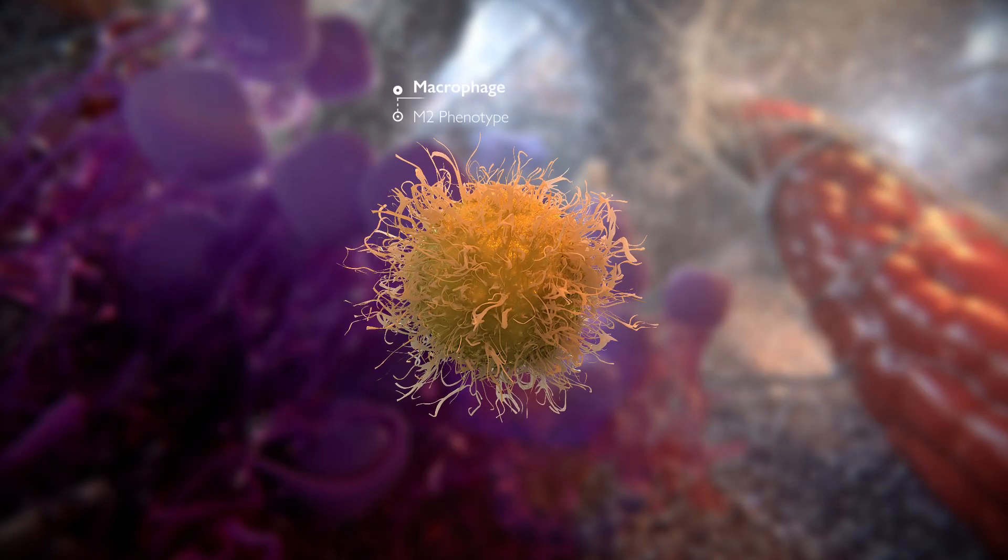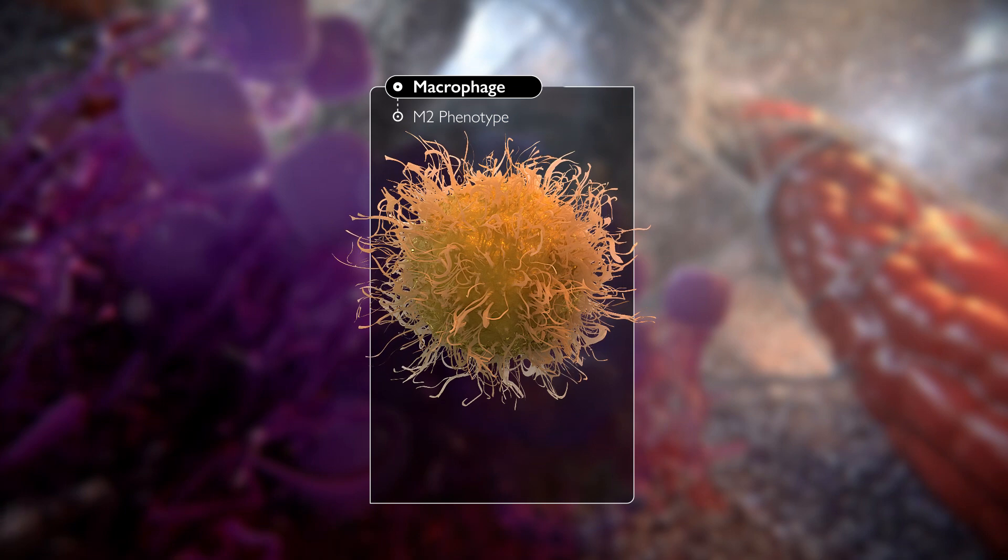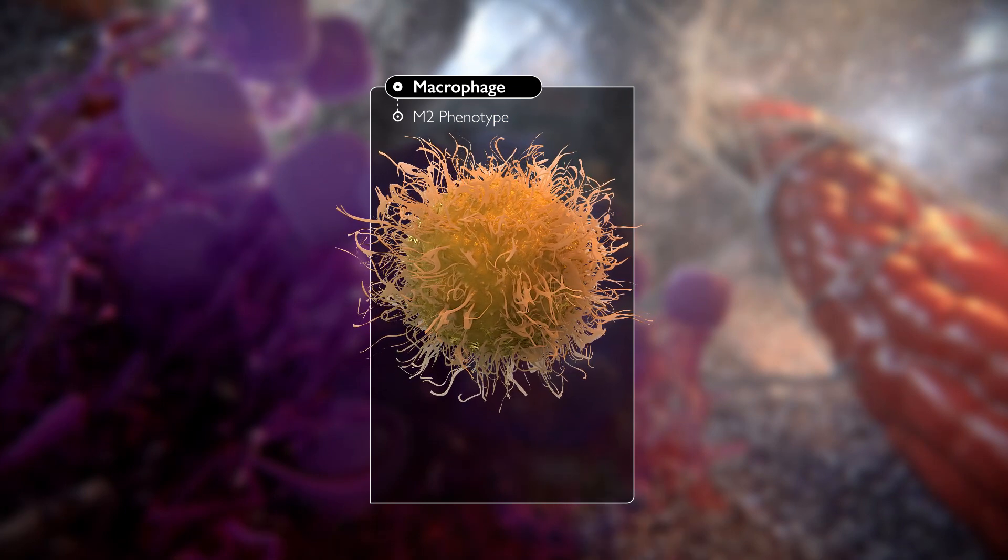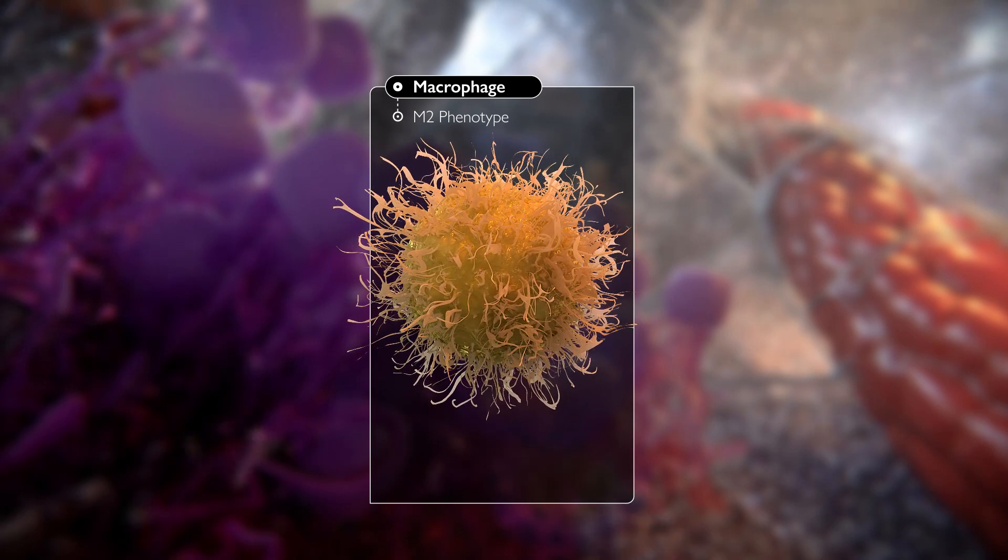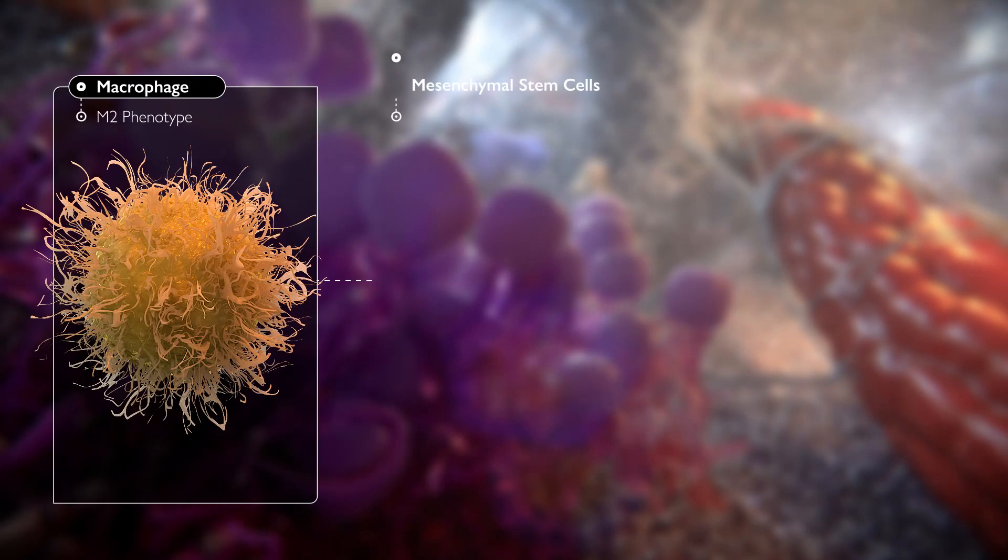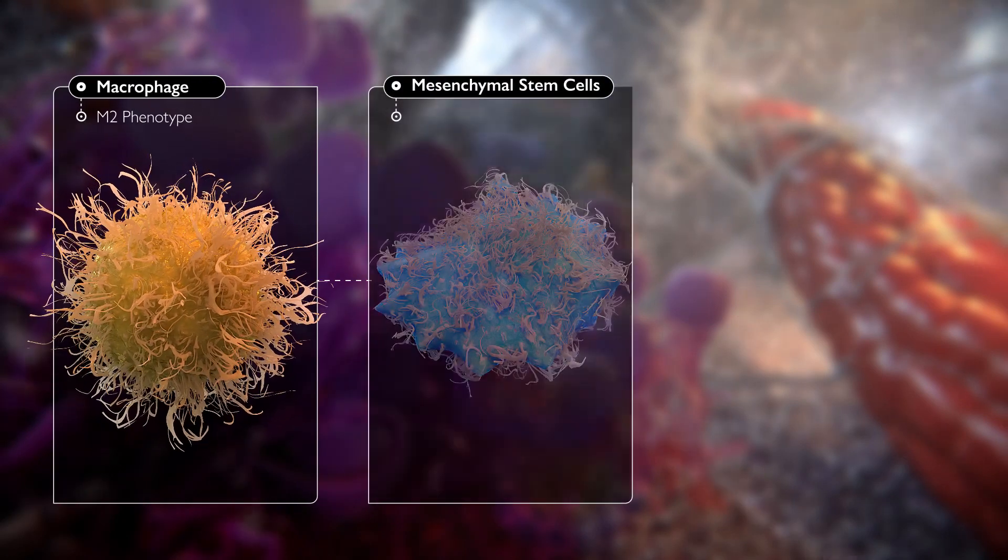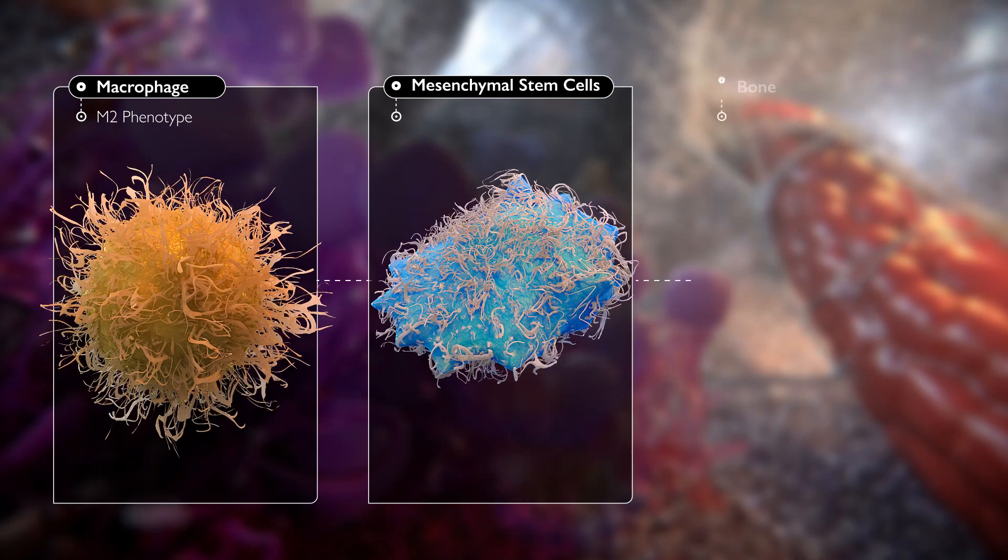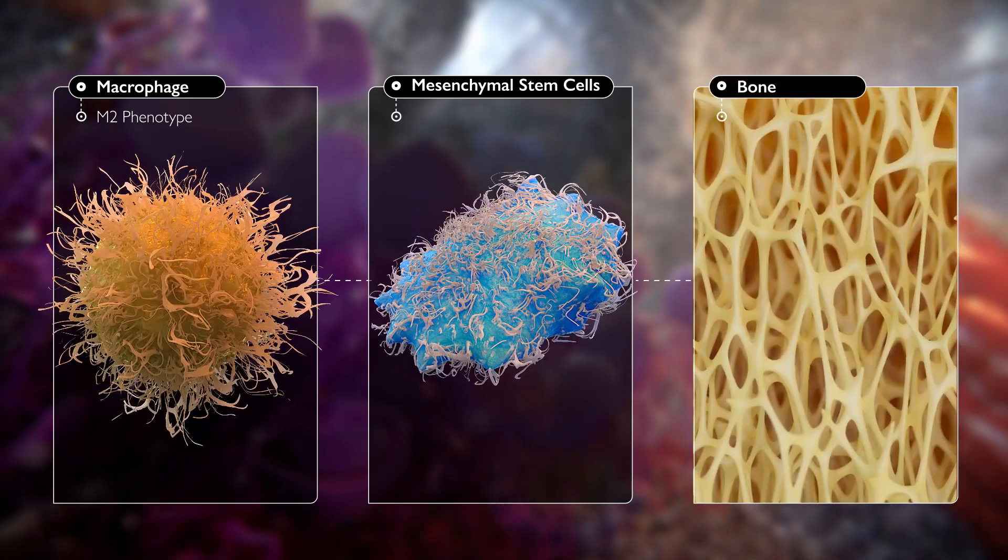The pro-healing M2 phenotype associated with the later stages of wound repair and tissue remodeling are anti-inflammatory. M2 macrophages upregulate mesenchymal stem cells both directly and indirectly, leading to the formation of new bone.